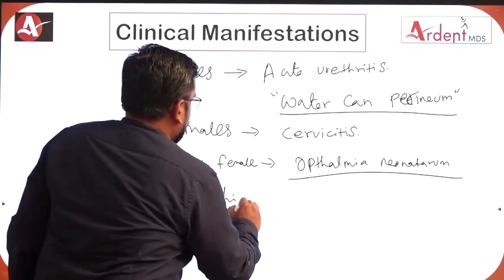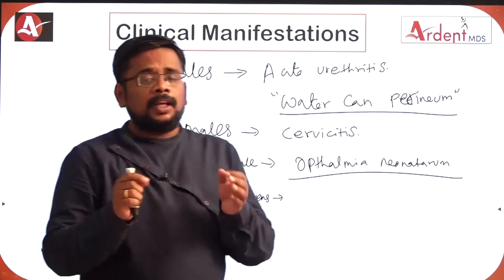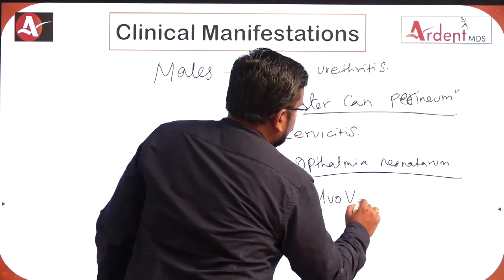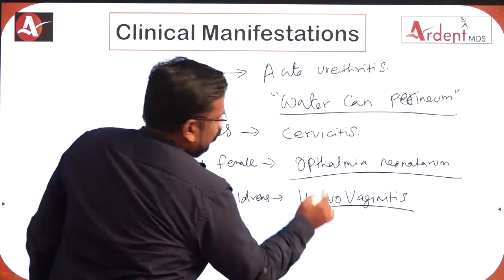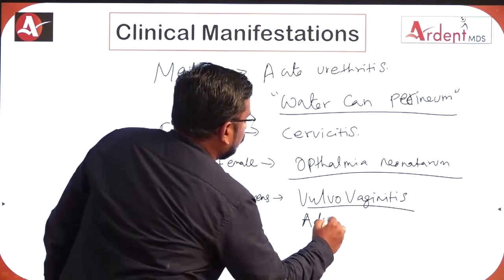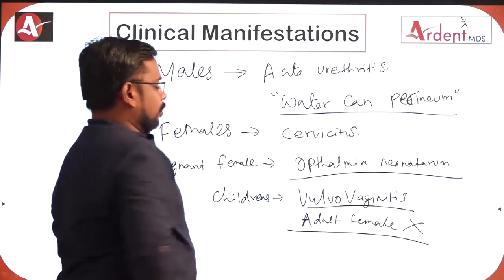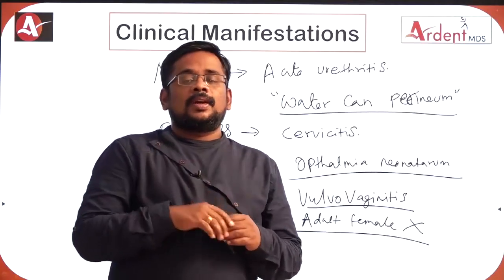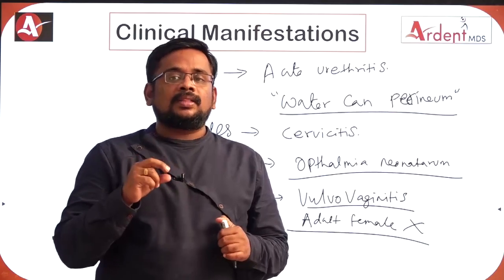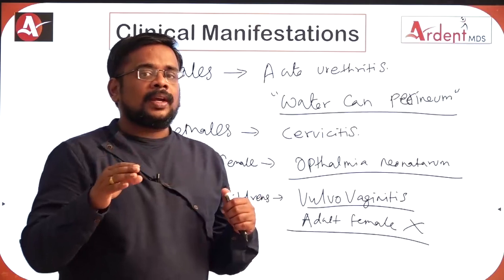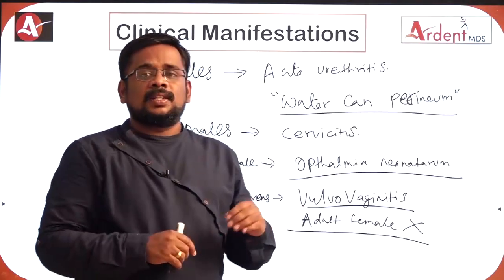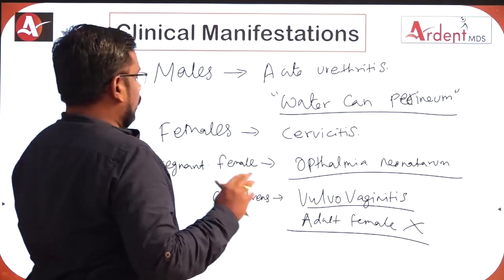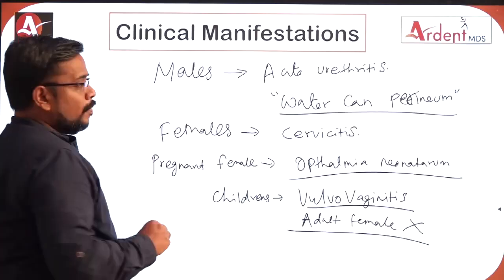In pre-pubertal girls and post-menopausal women, the most common manifestation is vulvovaginitis. It is not common in adult females because the adult vagina has an acidic pH and thick stratified squamous epithelium, making it resistant to gonococci. It is more common in pre-pubertal girls and post-menopausal women.